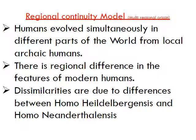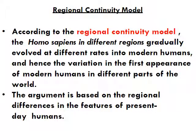The Regional Continuity Model is the second theory — it says that people who originated in Africa remained in Africa, while simultaneously people also originated in Asia and in Europe. Humans evolved simultaneously in different parts of the world from local archaic humans. There are regional differences in the features of modern humans, related to differences between Homo heidelbergensis and Homo neanderthalensis. According to this model, Homo sapiens in different regions gradually evolved at different rates into modern humans, hence the variation in the first appearance of modern humans in different parts of the world.